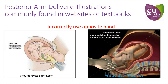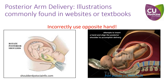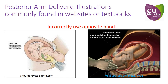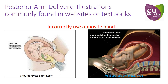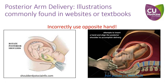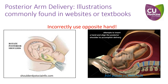Insertion of the wrong hand when approaching the delivery of the posterior arm can lead to difficulty with access and renders the maneuver ineffective. Some pictures and videos often show the insertion of the wrong hand in their demonstration, disregarding the fetal positioning.